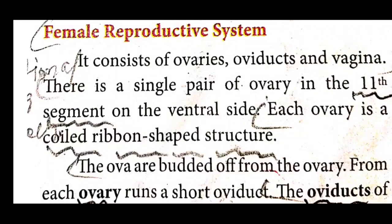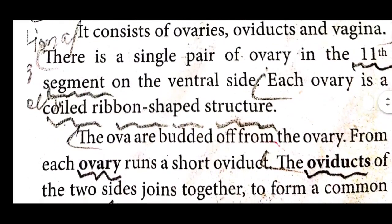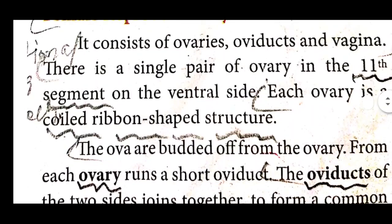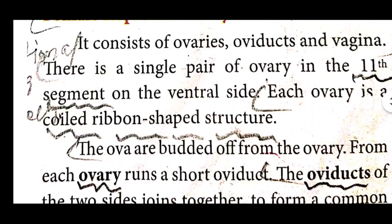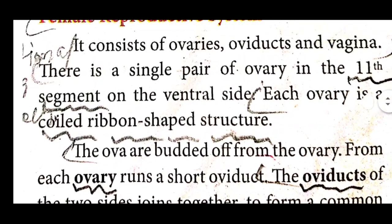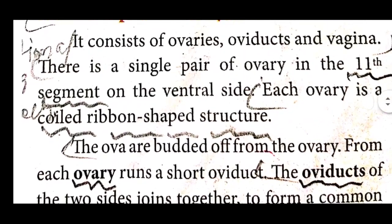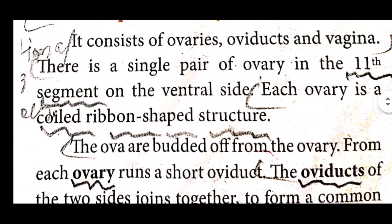The female reproductive system consists of ovaries, oviduct, and vagina. There is a single pair of ovaries located in the level segment on the ventral side. Each ovary is a coiled, ribbon-shaped structure.